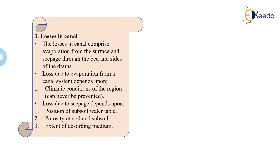The loss due to evaporation from the canal depends upon the climatic condition of the region, and hence it cannot be prevented. As we have studied in the hydrology chapter, there are various measures to prevent evaporation losses, but the methods are too hectic and time-consuming. So, effectively, it cannot be prevented. The losses by evaporation form a minor part — hardly 1 to 5% of the seepage loss.